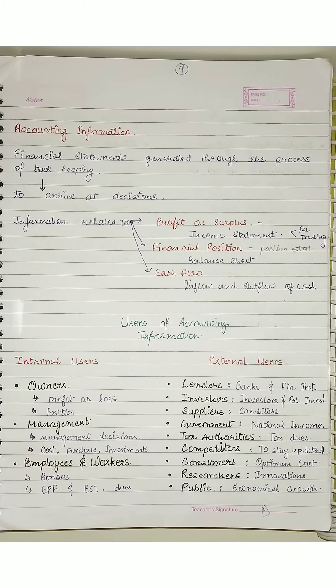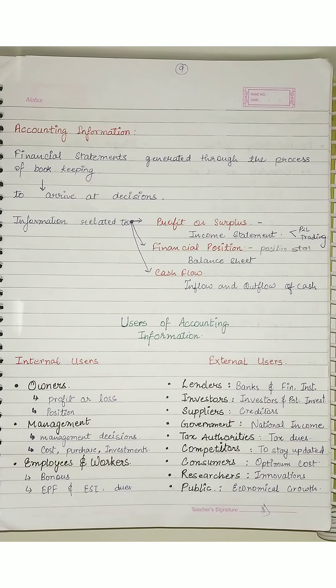Or trading and profit and loss account — income statement — we can call it anyway. So when someone has a trading account or a profit and loss account, they get the net profit or net loss. So the net profit or net loss — they get the profit and surplus.